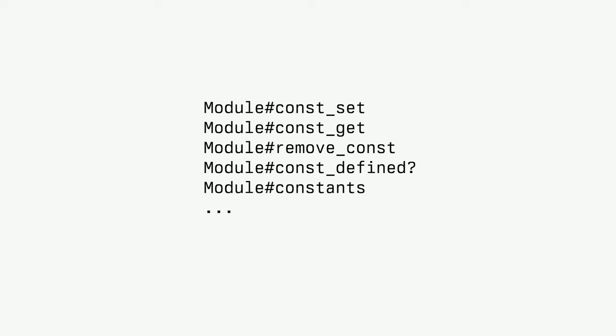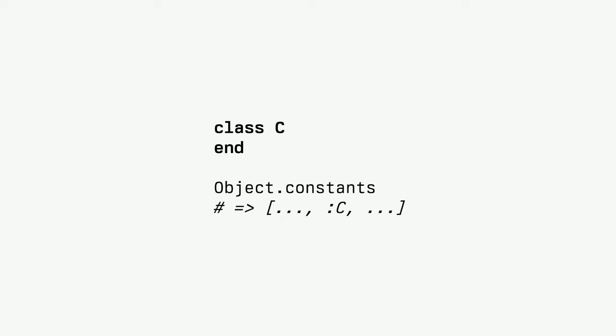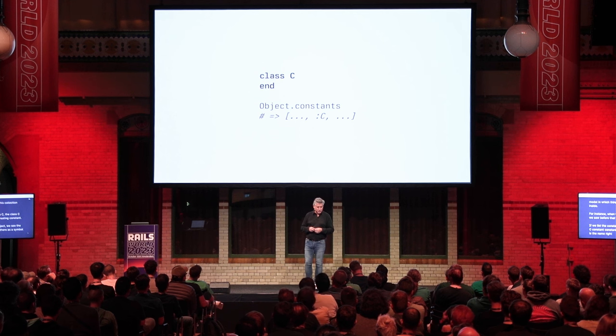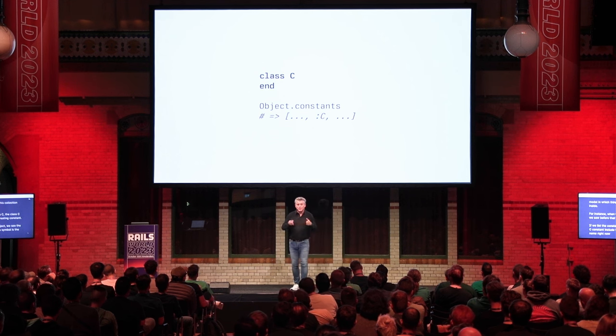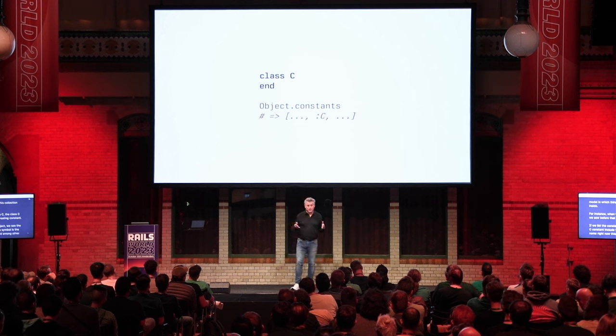The Module class has an API to manipulate this constant table: you can set constants, get constants, remove constants, and list constants. For instance, when we define class C, if we list the constants of Object we see the C constant included there as a symbol — the name.